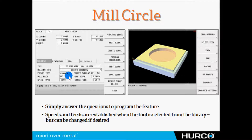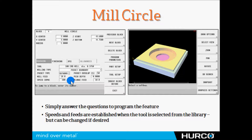Same for the mill circle — I give it the center, the radius, and the tool. For the next circle: where's the center, what's the radius, what's the depth, what tool? In this case and the one previous, the milling type is pocket boundary — not outside or inside, just a pocket boundary.